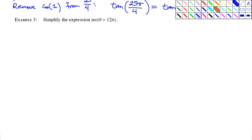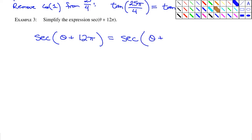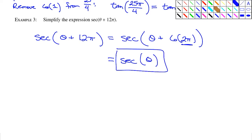Let's simplify the expression secant of (θ + 12π). The period of secant is 2π, so we have secant of θ plus 6 multiples of 2π. If you can remove 2π, you can remove 4π, 6π, 8π, and any multiple of 2π. So this 6×2π gets removed, and this is just secant of θ. That's the power of using the period — you can reduce large angles down to more reasonable ones.